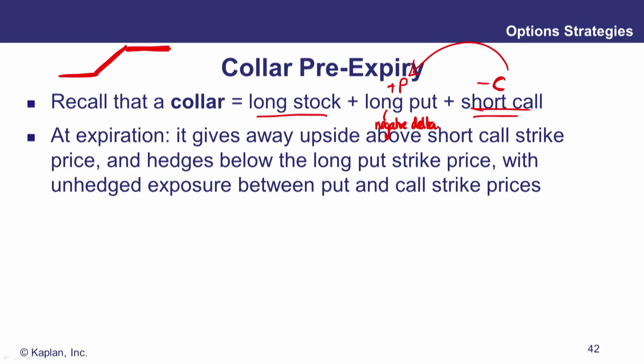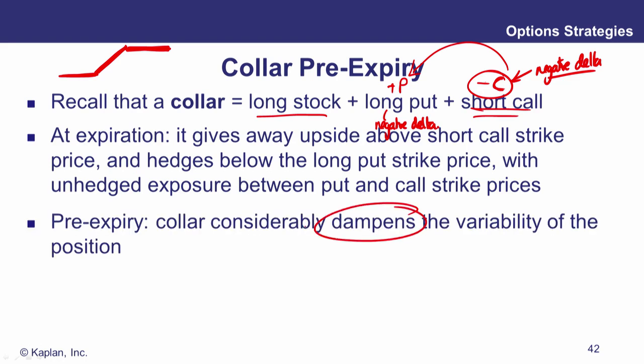A put has a negative delta — that dampens the overall delta. A short call has a negative impact because minus C has a negative delta, even though the call itself has a positive delta. You're really suppressing the position delta. When the stock price falls a lot, the put is deeply in the money and its minus-one delta outweighs the plus-one delta of the stock — they cancel out and you have zero exposure.